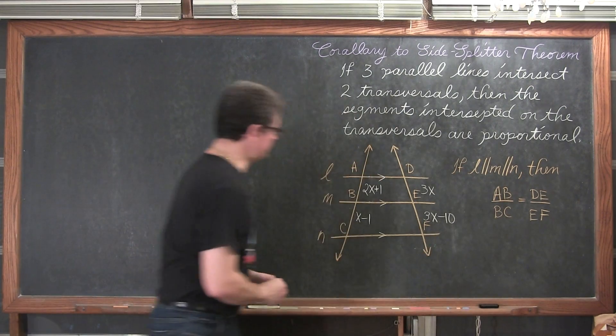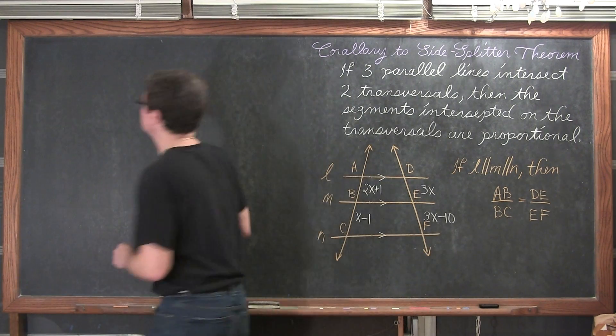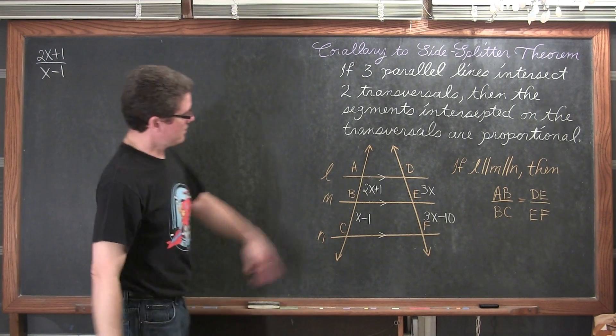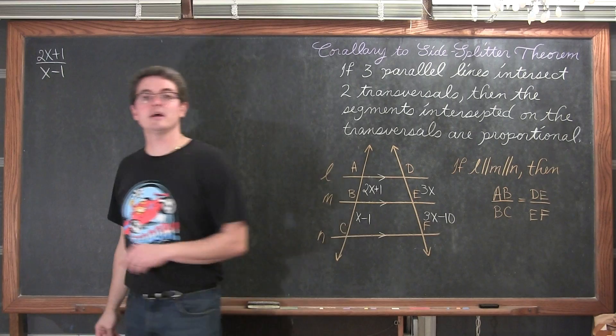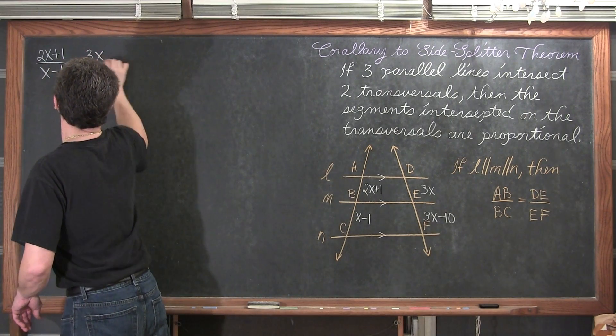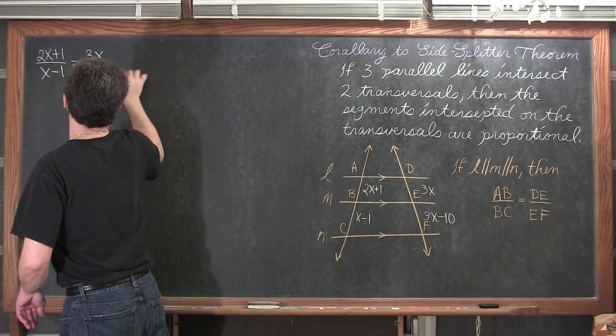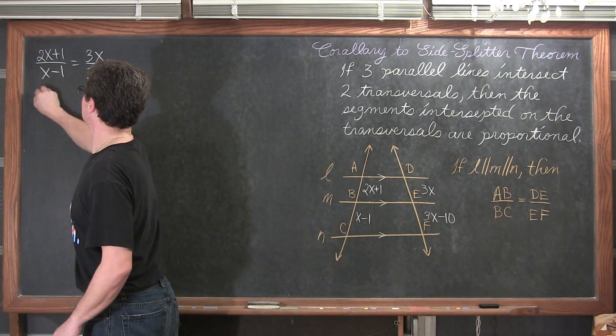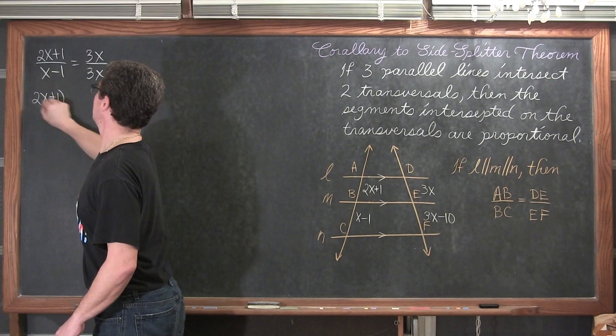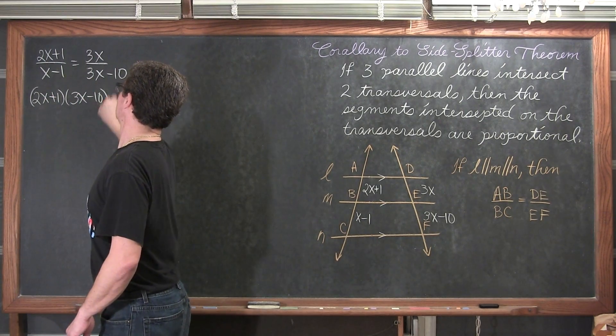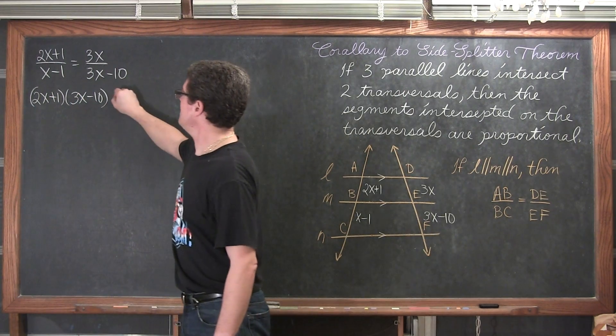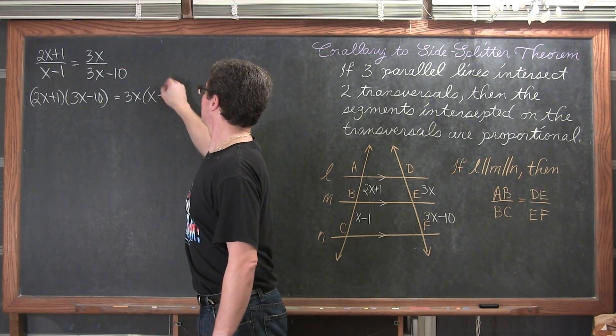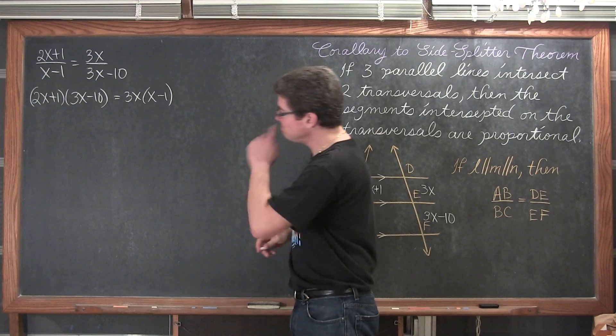And I also want to remind you that we are doing geometry problems not pure algebra. So, when we are done we are going to have to make sure that our answers are valid for this diagram. That I don't have negative measurements or such like that. So, let's see here. We have got 2x plus 1 over x minus 1. And on the other side we have 3x over 3x minus 10.